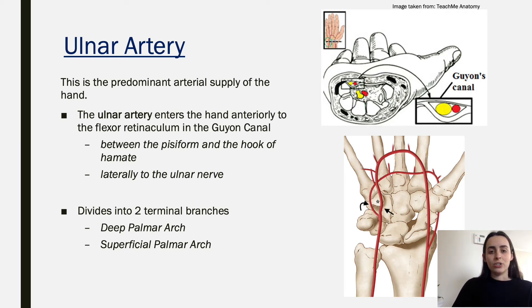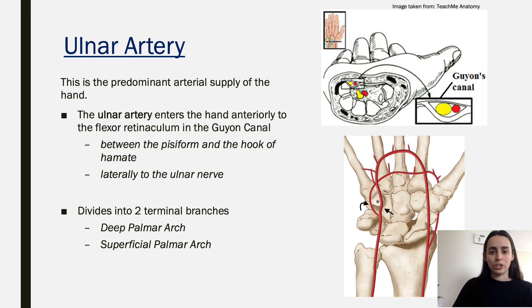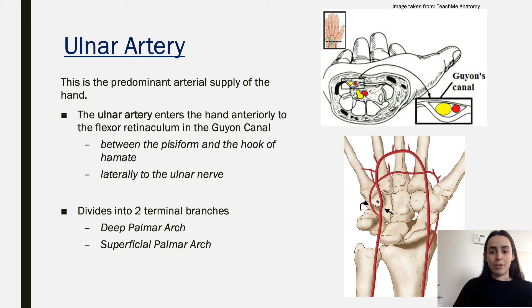The ulnar artery then divides into two terminal branches, which we'll go through in detail: the deep palmar arch and the superficial palmar arch. These then have their own separate branches which supply the rest of the fingers and the rest of the hand.